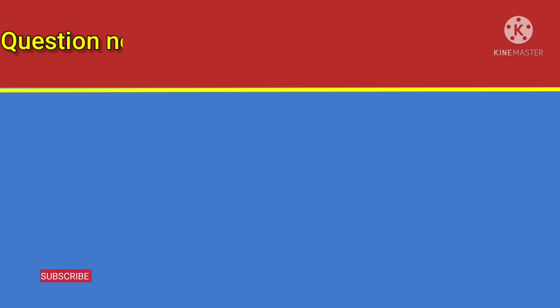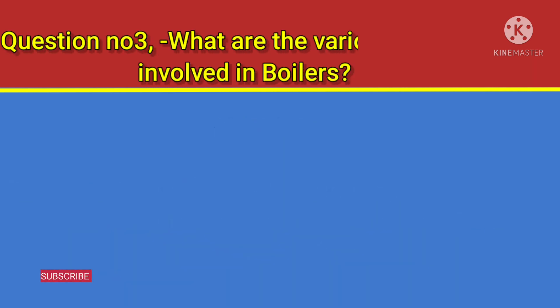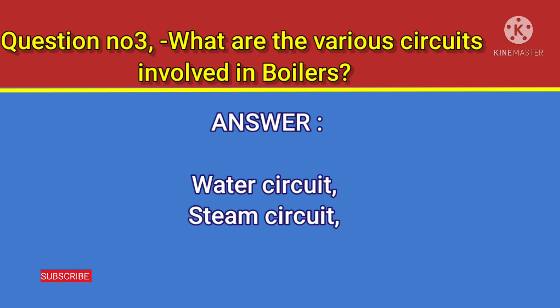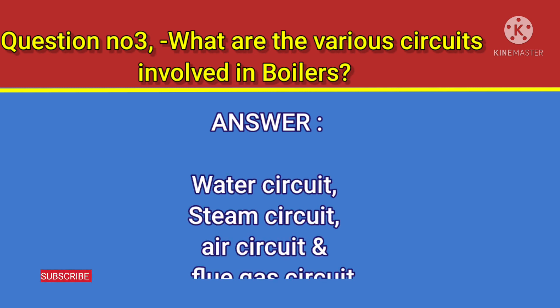Question number 3: What are the various circuits involved in boilers? Answer: Water circuit, steam circuit, air circuit, and flue gas circuit.